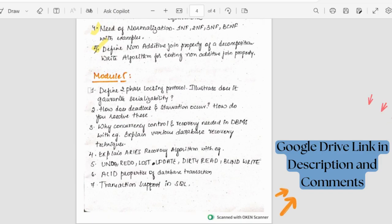Coming to fifth module, we have two phase locking system. Does it guarantee realizability? How does deadlock and starvation occur? How do you resolve those? What is concurrency control and why is it needed in DBMS?